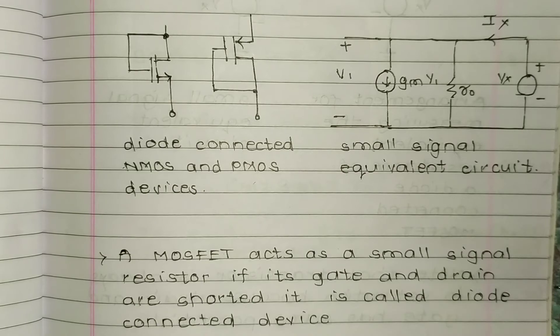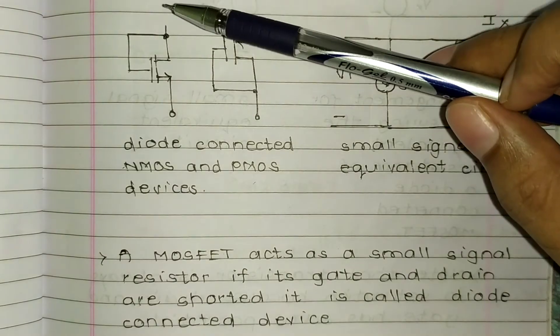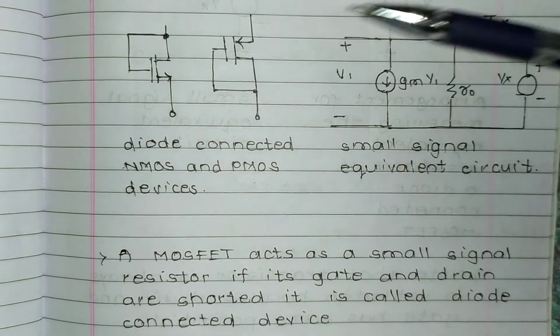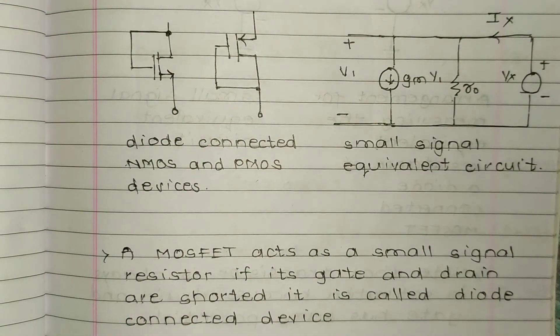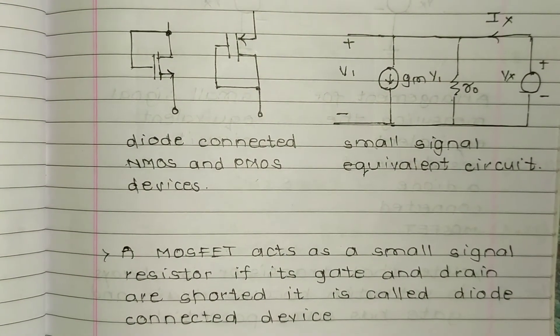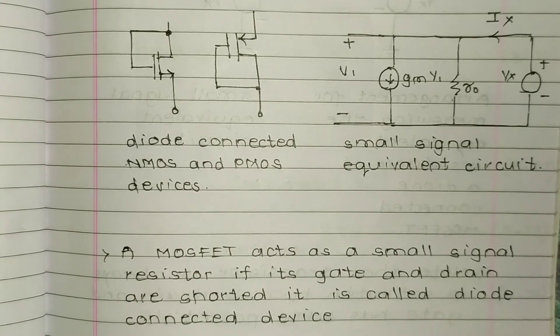This is the drain and this is the gate, they are shorted. This configuration exhibits a small signal behavior similar to a two terminal resistor. Here, the MOSFET is used as a resistor. This is about a common source stage with diode connected load.